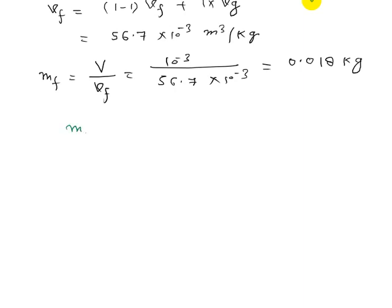The escaped mass equals the initial mass minus the final mass. After calculation, the escaped mass is 0.036 kg.